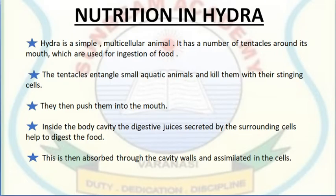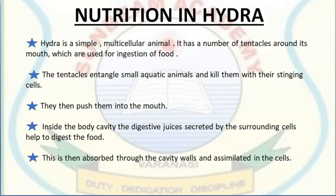One more example is nutrition in hydra. Hydra is a multicellular organism — a simple multicellular animal. It has a number of tentacles around its mouth which are used for ingestion of food. The tentacles entangle small aquatic animals and kill them with their stinging cells. They then push them into the mouth. Inside the body cavity, digestive juices secreted by the surrounding cells help to digest the food, which is then absorbed through the cavity walls and assimilated in the cells.